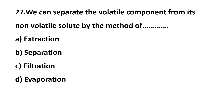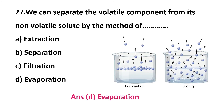Question 27: we can separate a volatile component from its non-volatile solute by the method of — option A: extraction, option B: separation, option C: filtration, option D: evaporation. The answer is option D: evaporation. Volatile means easily evaporated substances. So volatile components are easily separated by the evaporation method.